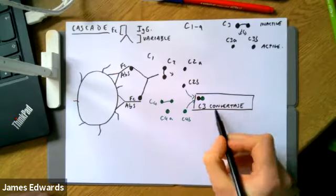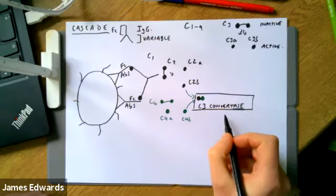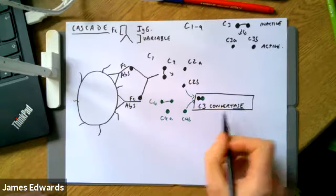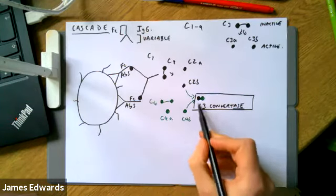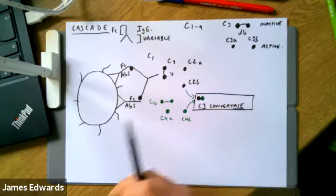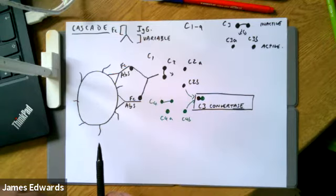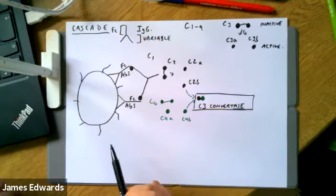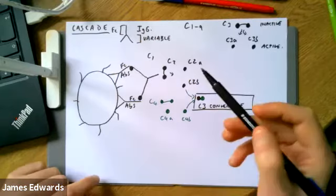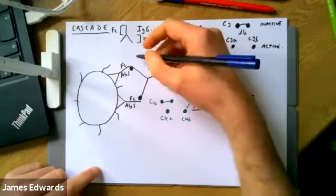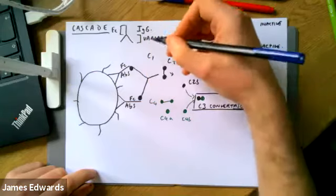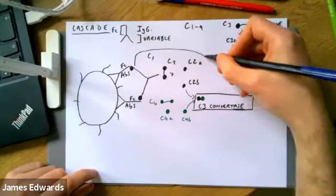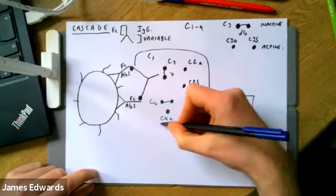As the name suggests, the C3 convertase is an enzyme that converts C3 into its active form — C3a and C3b. This is one part of the complement system sometimes referred to as the classical pathway.